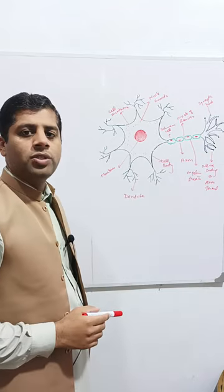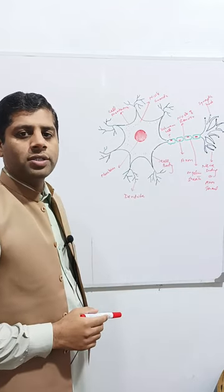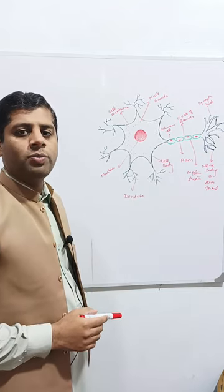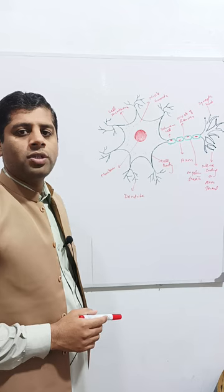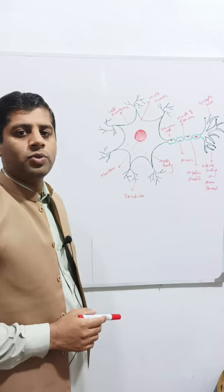The nissel granules are composed of three structures: the rough endoplasmic reticulum, Golgi body, and ribosomes.